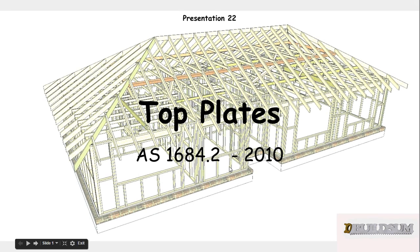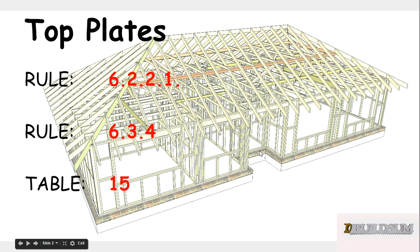G'day and welcome back to Buildsum, presentation 22 in the series on the Timber Framing Code or AS 1684. In this one we're going to look at top plates. The rules associated with top plates are rule 6.2.2.1 and 6.3.4, and the table we're going to use for our example is table 15.